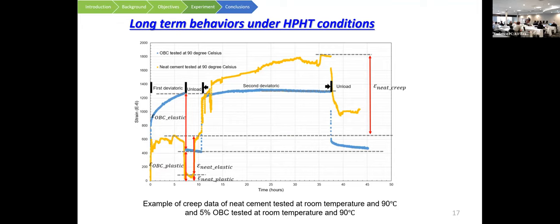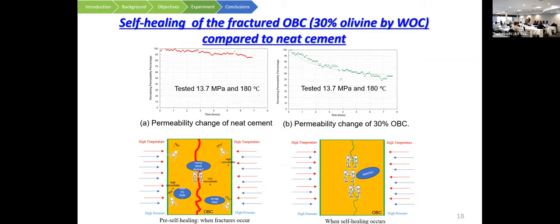The creep test was done at 3,000 psi confining pressure and 90°C. The yellow curve (neat cement) shows creep strain increasing over time — more viscoplastic deformation. The blue curve (30% OBC) flattens out — viscoplastic deformation essentially gone. This is a very interesting and beneficial finding for the cementing job. Finally, we did the self-healing test: we fractured samples in triaxial test, performed core flooding with a set pressure differential, and calculated permeability change using Darcy's law.